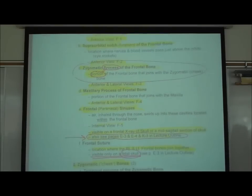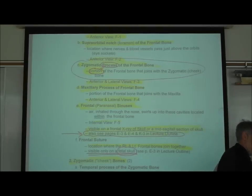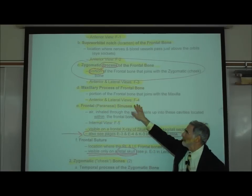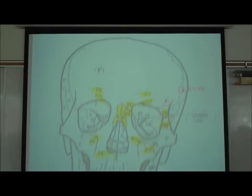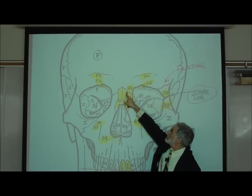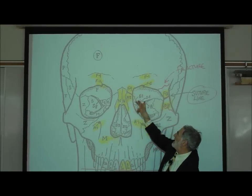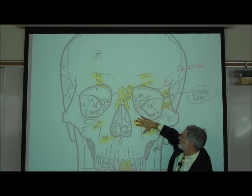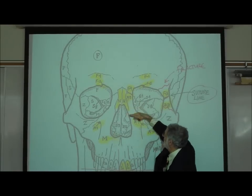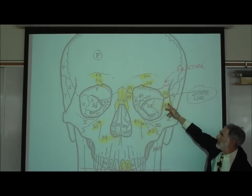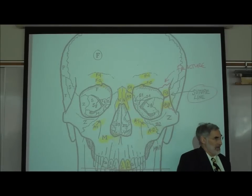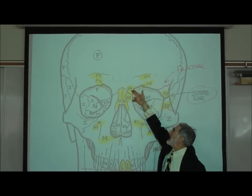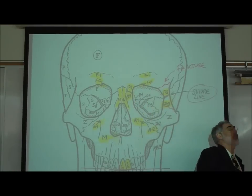Going back to the frontal bone, the maxillary process of the frontal bone is where the frontal bone attaches to the maxilla. You can look at either an anterior or lateral view — it's labeled F4. On the anterior view you'll notice F4, and there's a suture line on the medial side of the eye socket that separates the frontal bone from the maxilla — the upper jawbone. The frontal bone attaches to the maxilla on the medial side of the orbit and attaches to the zygomatic bone on the lateral side. F4 is the maxillary process of the frontal bone; M3 is the frontal process of the maxilla.